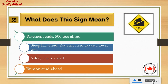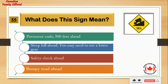What does this sign mean? Number 1: pavement ends 500 feet ahead. Number 2: steep hill ahead — you may need to use a lower gear. Number 3: safety check ahead. Number 4: bumpy road ahead. And the answer is: steep hill ahead — you may need to use a lower gear.